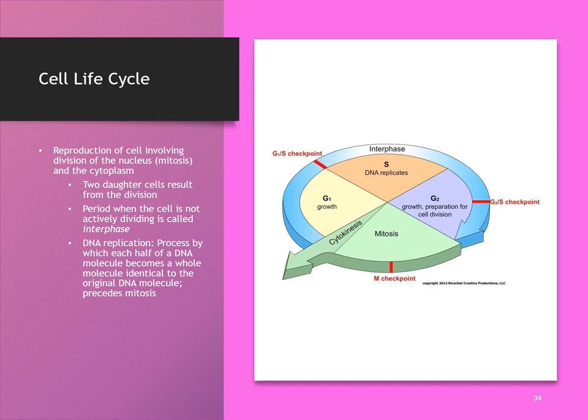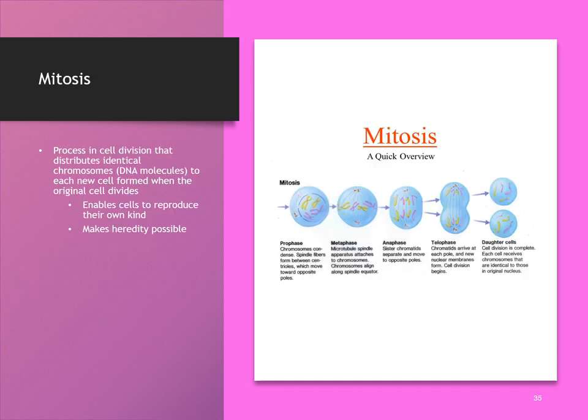During mitosis, two daughter cells result from the division — one cell completely splits itself into two exact copies. Mitosis is the process of cell division that enables cells to reproduce their own kind and make a duplicate copy. The four phases are prophase, metaphase, anaphase, and telophase.